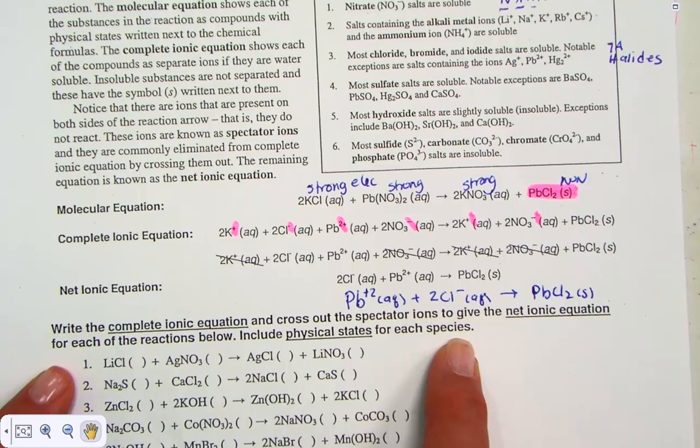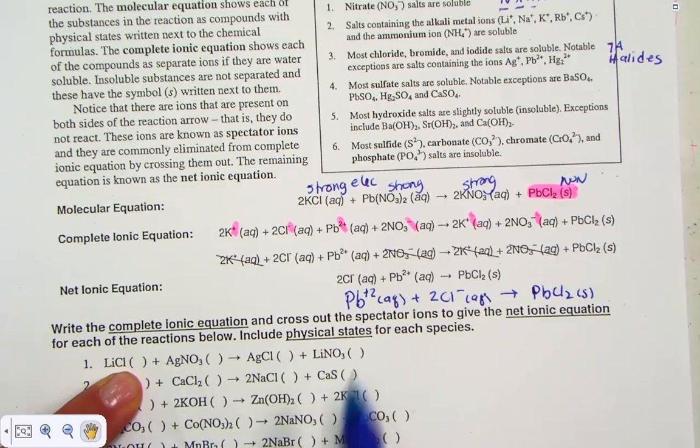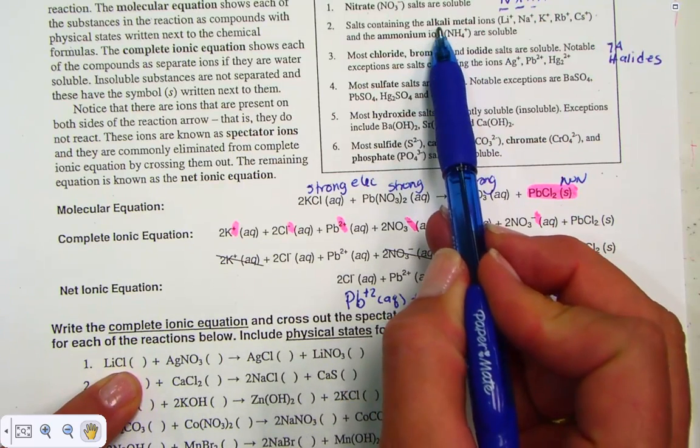Let me model one. Lithium chloride—would that be aqueous or solid? Well, lithium chloride, first name is alkali metal. Lithium, always soluble.